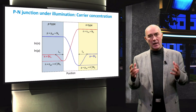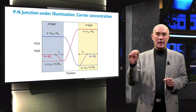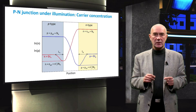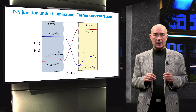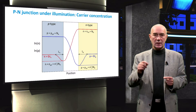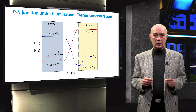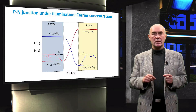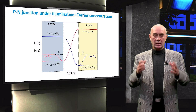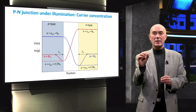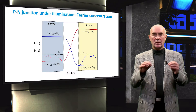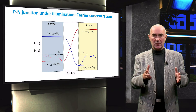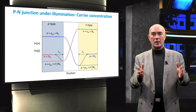The minority carriers generated within the diffusion length are able to diffuse to and cross the depletion region. Those minority carriers generated at the edge of the depletion region are immediately swept towards the other side. The minority carrier concentration at the edge of the depletion region is nearly equal to the concentration at thermal equilibrium. As we go away from the edge of the depletion region, the chance of extra minority carriers drifting to the other side decreases, so minority carrier concentration increases. The concentration outside the diffusion length region is at a steady-state value determined by the generation and recombination rate in the quasi-neutral region.